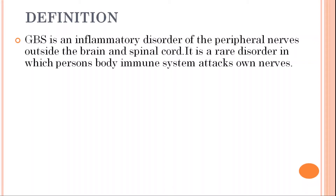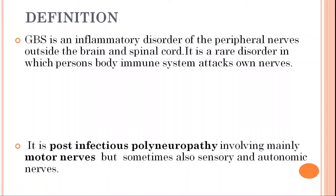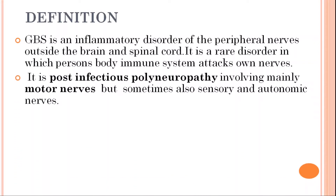GBS is an inflammatory disorder in which mostly peripheral nerves are affected. Mostly the motor nerves are affected, but sometimes the sensory and autonomic nerves will also be affected. The person's own body immune system attacks the own nerves. It is a post-infectious polyneuropathy involving mainly motor nerves but sometimes also sensory and autonomic nerves.